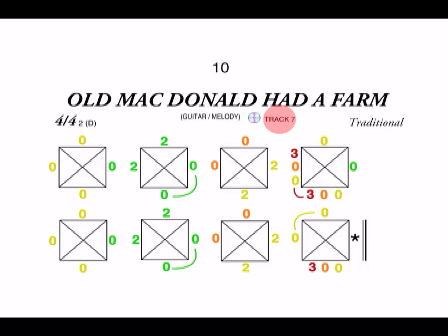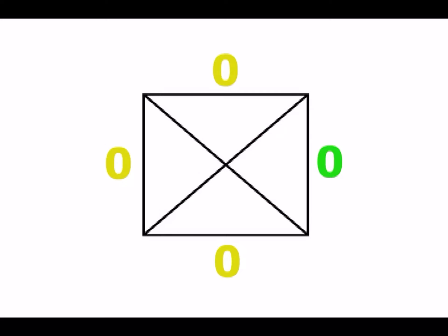Let's try playing the melody to Old MacDonald. On the first measure, we play the green and yellow string with the number zero. This means you play the string without pressing down on it. Let's see an example.